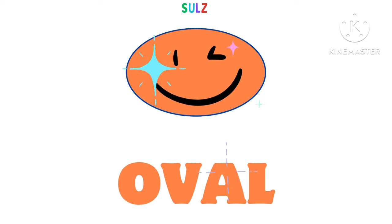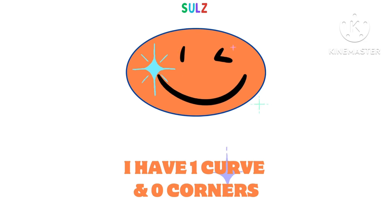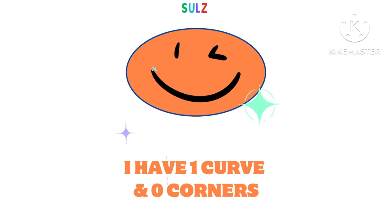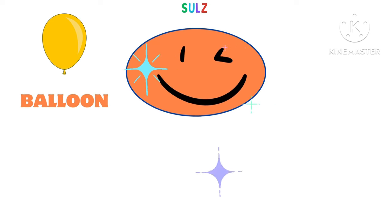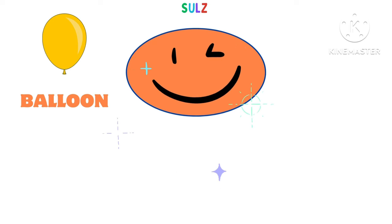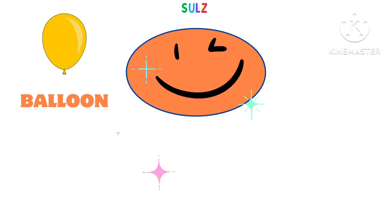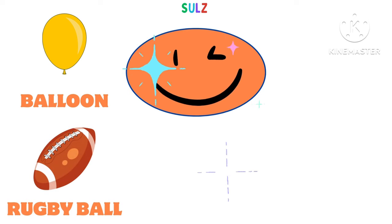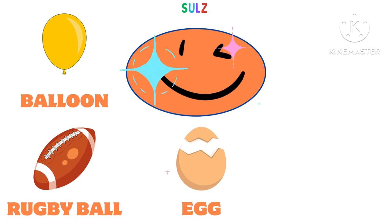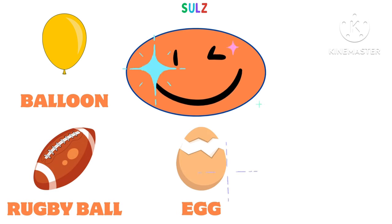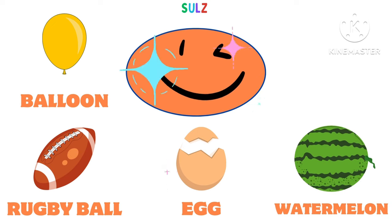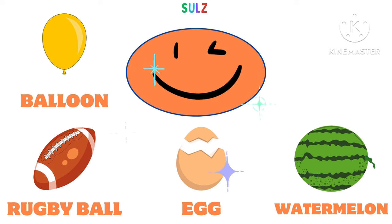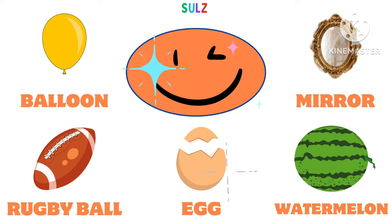Hi, I am oval. I have one curve and zero corners. You can see me in a balloon, rugby ball, egg, watermelon, and mirror.